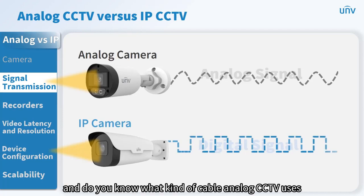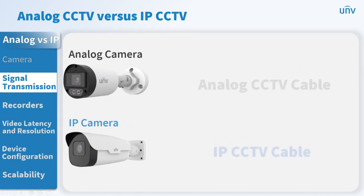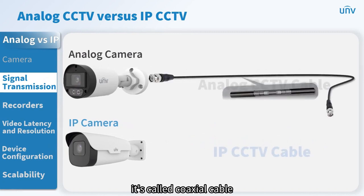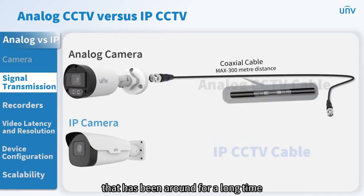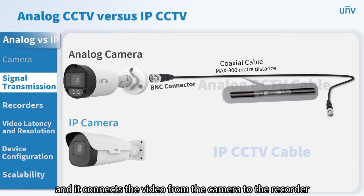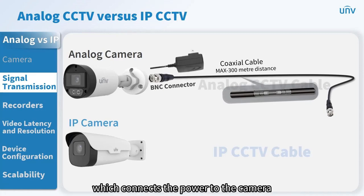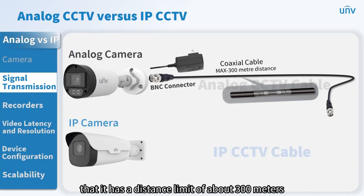Analog CCTV uses a coaxial cable, a traditional cable that has been around for a long time. It uses a connector called a BNC connector, which connects the video from the camera to the recorder. There is also another connector called a DC connector, which connects the power to the camera. One thing to know about this cable is that it has a distance limit of about 300 meters.